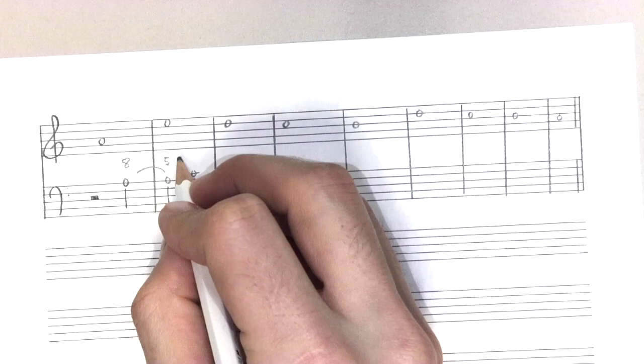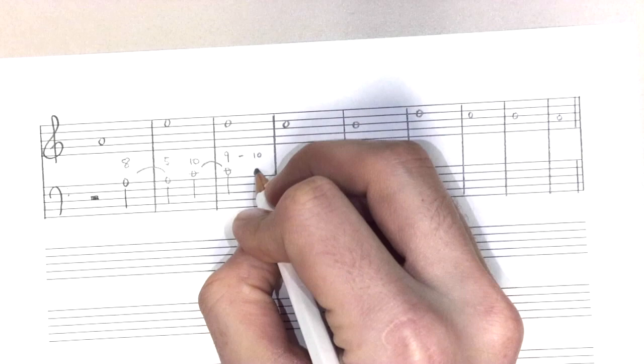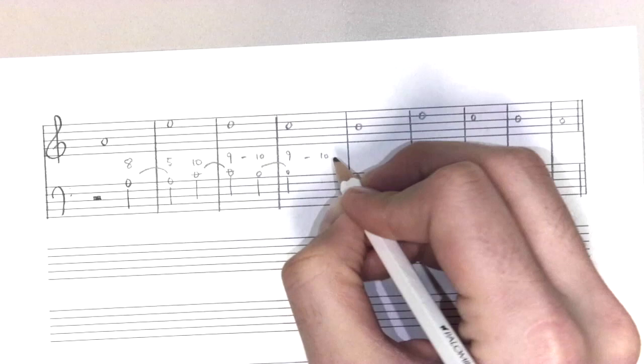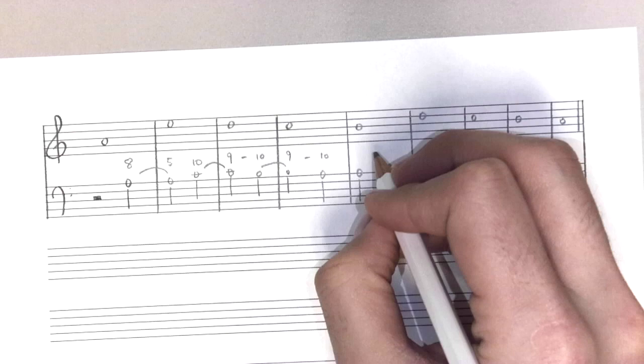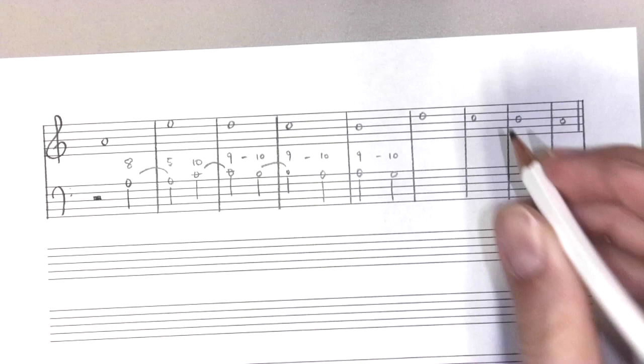So I'm going to leap up to pick up this tenth. Then I'll hold it over, that interval will collapse to a ninth, and I can move downwards. Then we keep that going, 9 to 10. And let's just follow it as far as we can, 9 to 10. Good. So what we have so far sounds something like this.